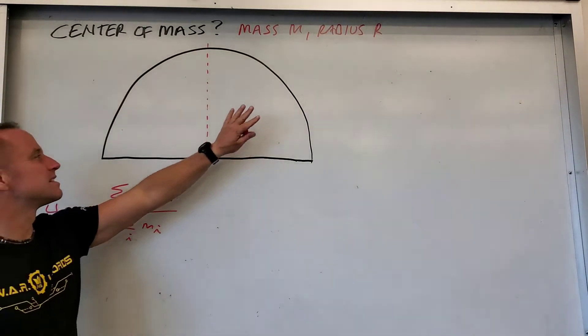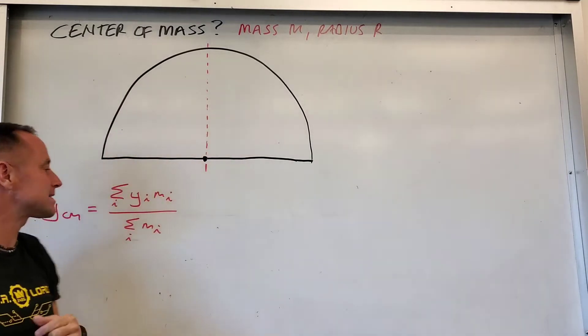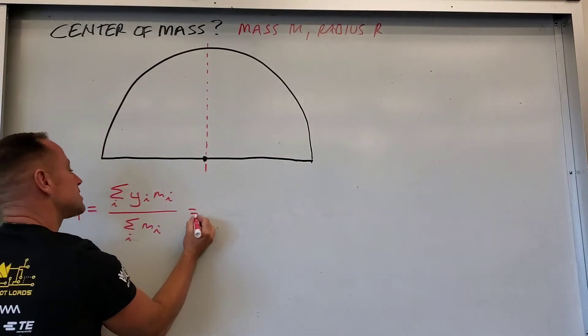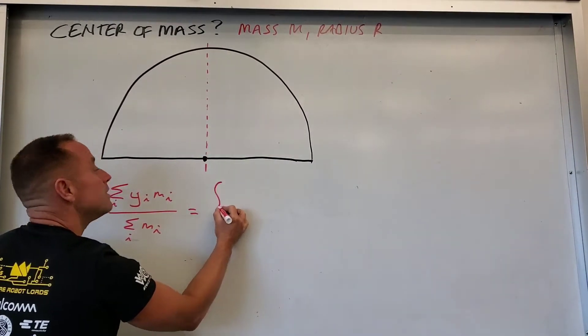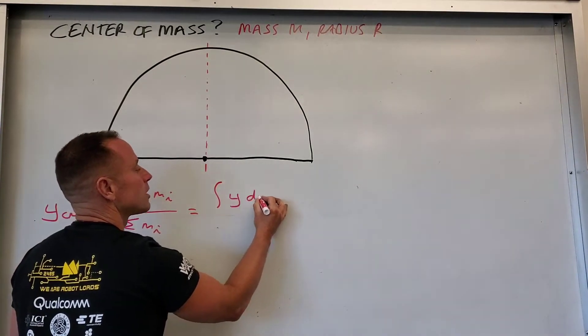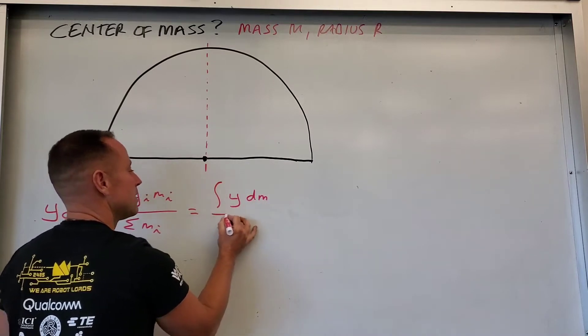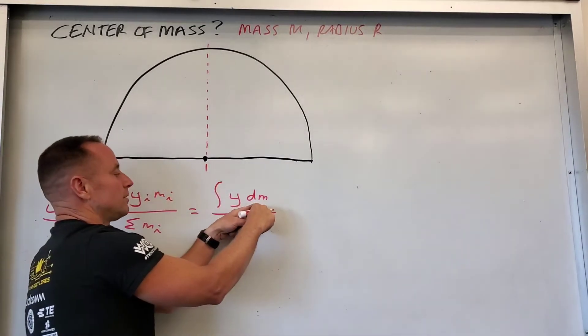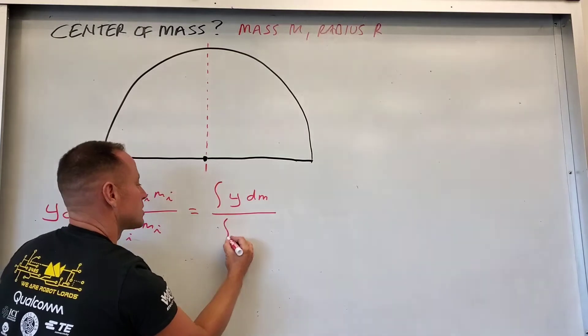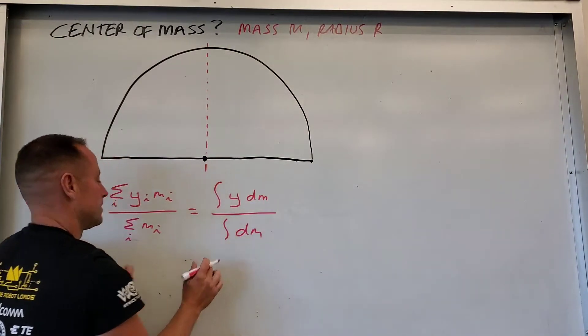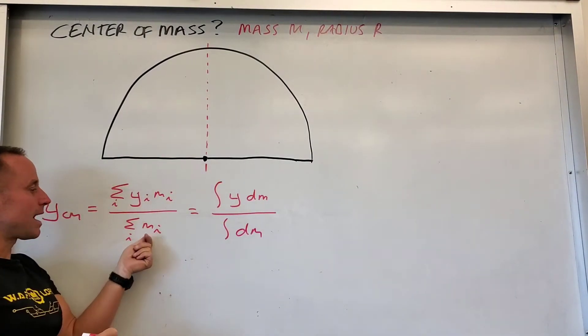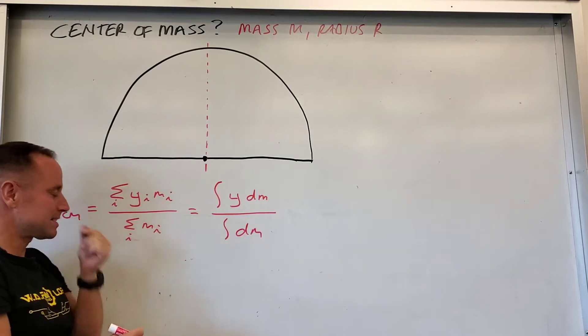But since this is not a set of discrete point masses, this is a continuous distribution of mass. These sums will become infinite sums or integrals, and so what we need to do is carve this up into a whole bunch of little chunks of mass called dm and multiply each little mass by its y coordinate. So it's like a weighted average of the y coordinates, and of course the bottom is just the total mass. Instead of summing up individual objects and each little mass m sub i, we're summing infinitesimal masses dm.